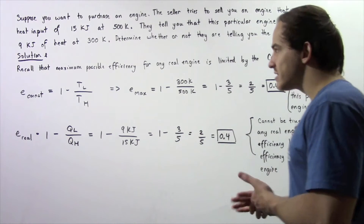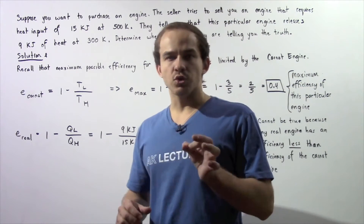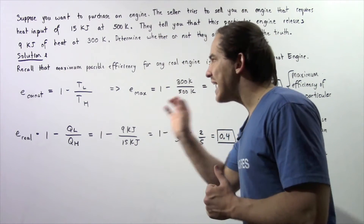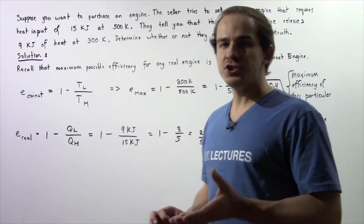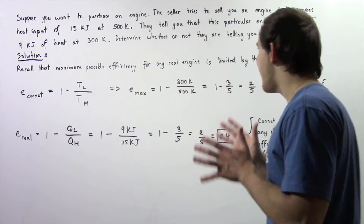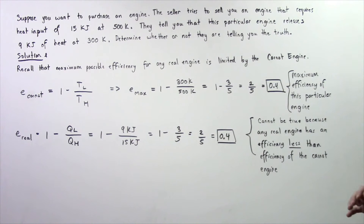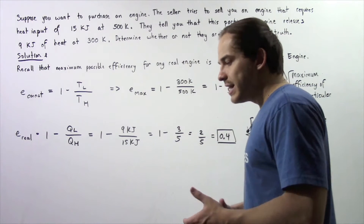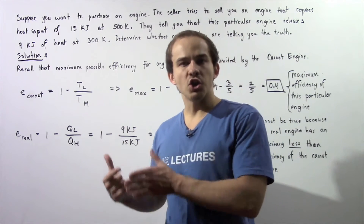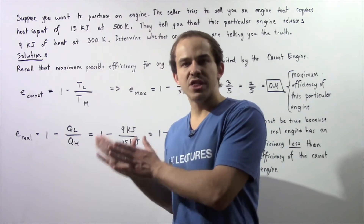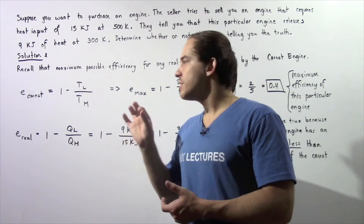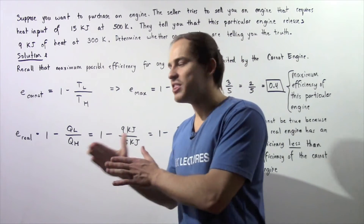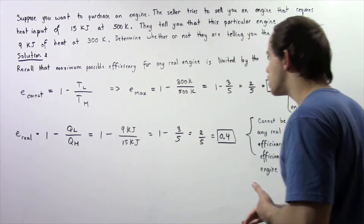The way that we're going to solve this problem is by recalling the following statement: the maximum possible efficiency for any real engine is limited by Carnot's engine. So if we calculate the efficiency of the Carnot engine at that particular condition, the efficiency of the real engine must be less than that of Carnot's engine.